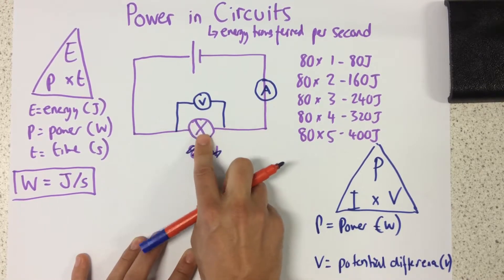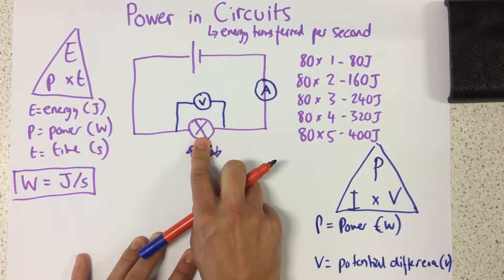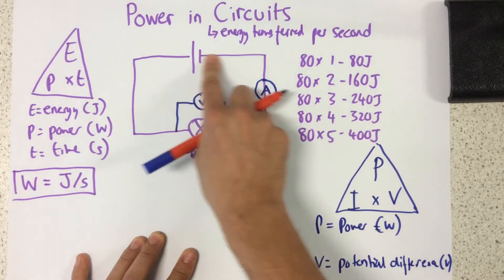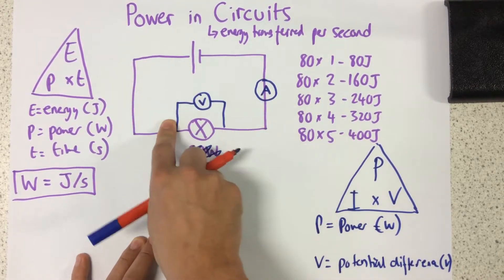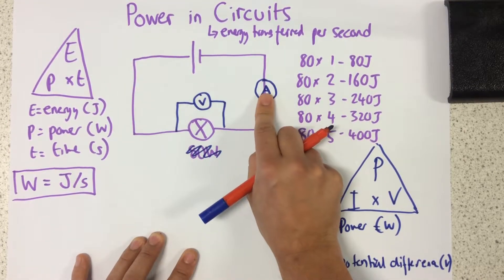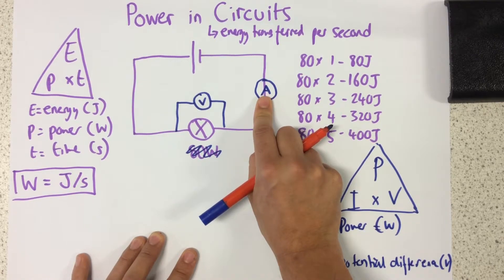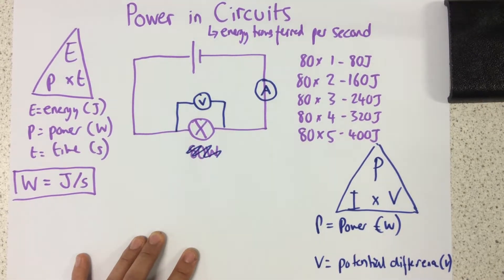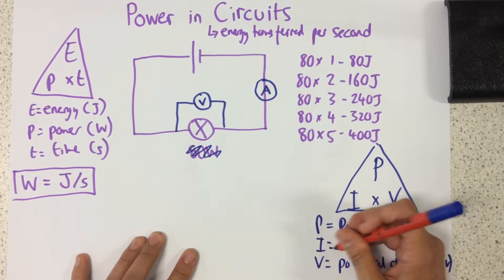Also what my ammeter measures is the flow of charge around the circuit. So if I have more charge flowing around or charge flowing around at a faster rate, I'm also going to have a higher power.